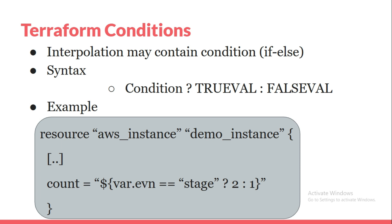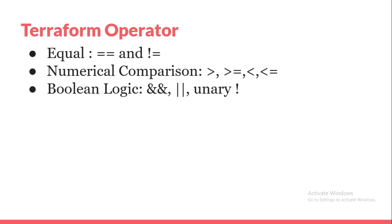Terraform operators used in conditions include: equality with double equals, not equal to, and numeric comparisons — greater than, greater than or equal to, less than, less than or equal to. For boolean logical conditions you can use double ampersand for AND, double pipe for OR, and the exclamation sign as a unary NOT operator. These are the Terraform interpolation variables, configuration, conditions, and operators.